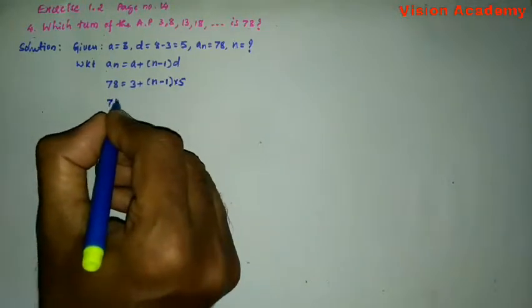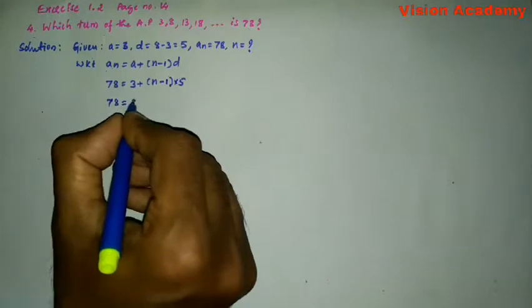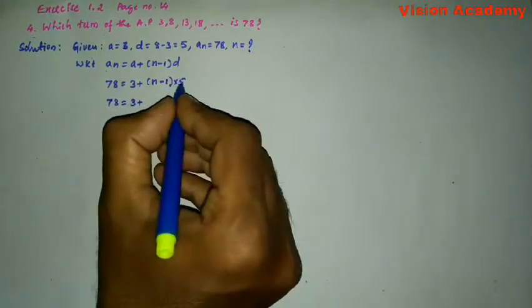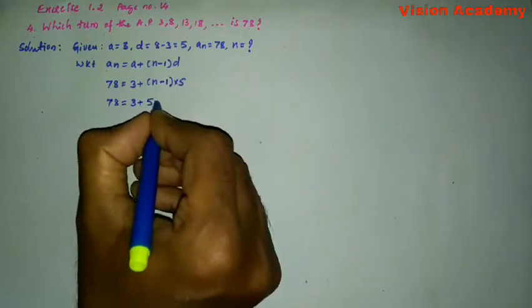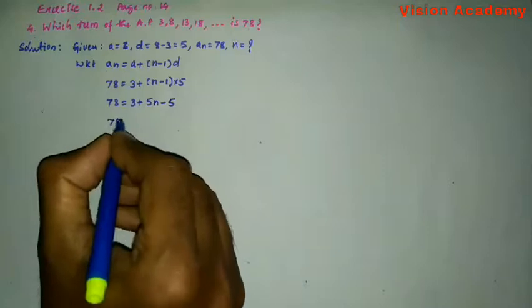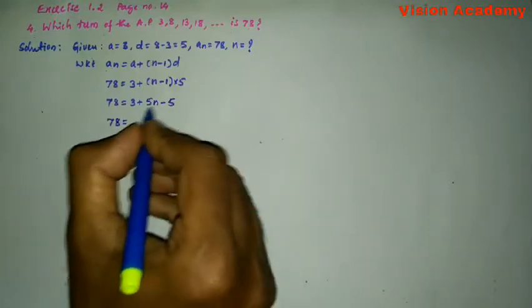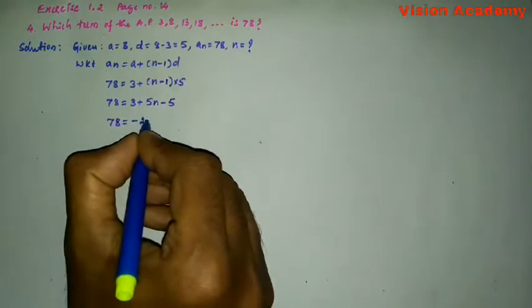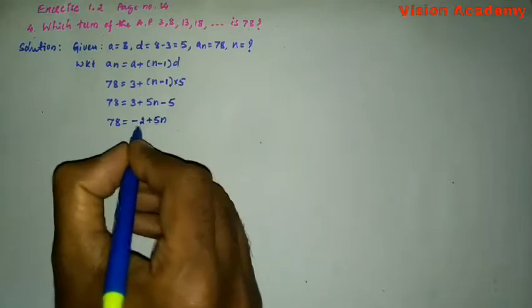So, let us simplify. 78 is equal to 3 plus, multiply this 5 inside of the bracket, it will become 5N minus 5. 78 is equal to 3 minus 5 is minus 2 plus 5N.